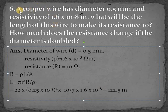Hello everyone, let's start with question number 6. In this it is given that a copper wire has diameter of 0.5 mm and resistivity of 1.6 × 10⁻⁸ ohm meter. What will be the length of this wire to make its resistance 10 ohm? How much does the resistance change if the diameter is doubled?